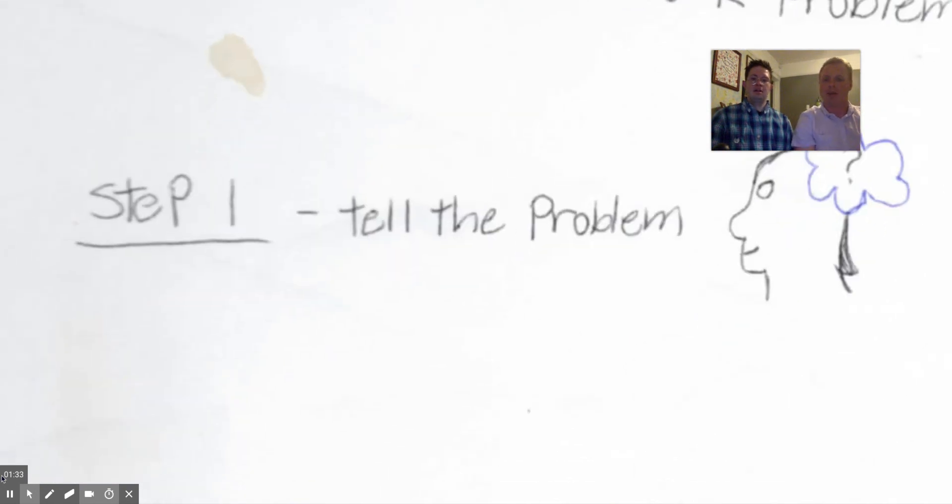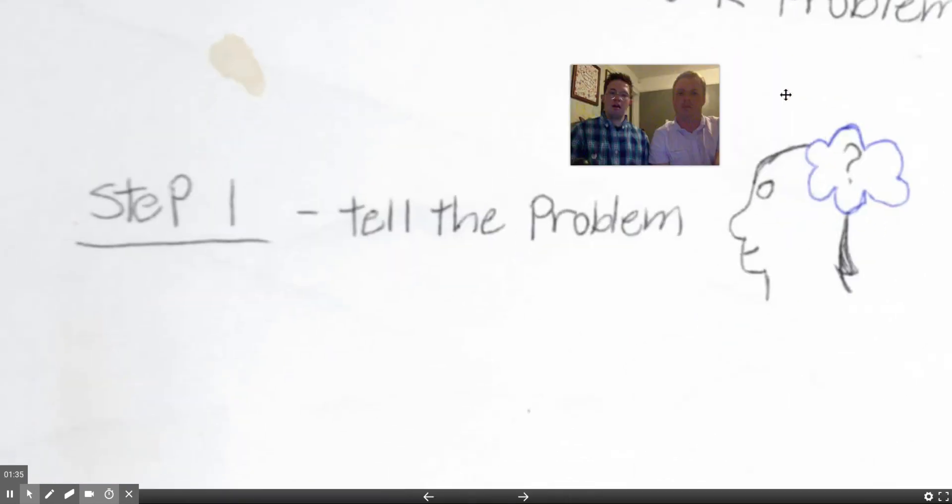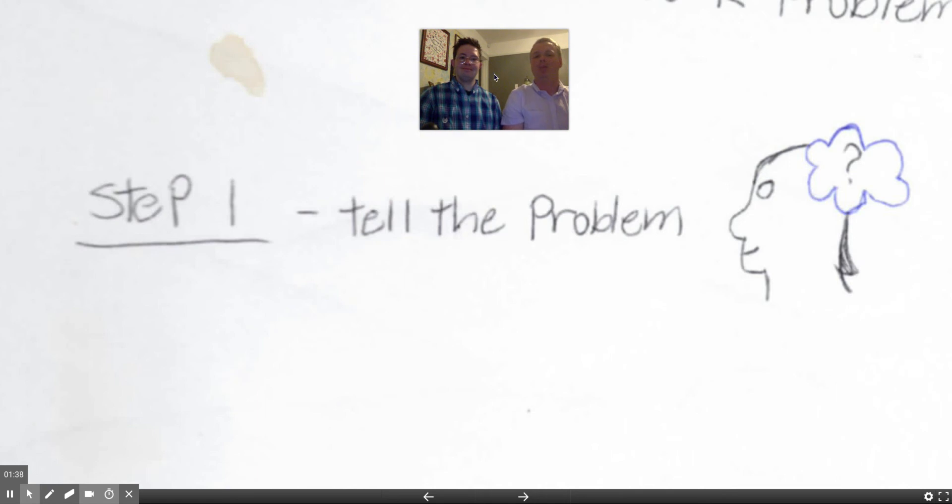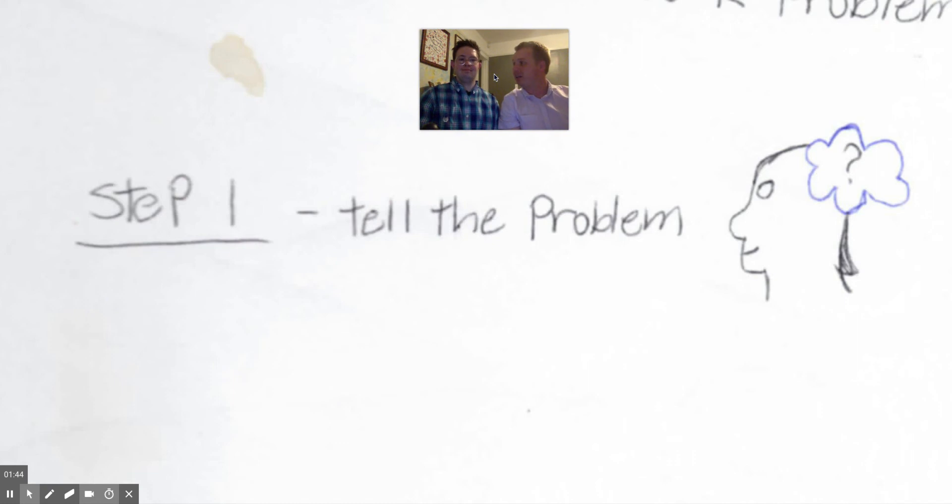What's step one to that? Make sure you define the problem. We have to look at the problem, and we have to look at the different facets of the problem, the different people that are connected to the problem, the different timelines to the problem, the indicators of success for the problem getting solved. So we need to understand that problem. That's perfect for step one.